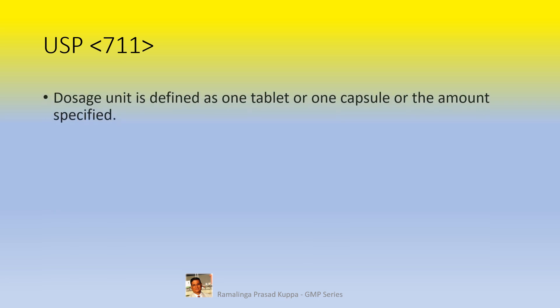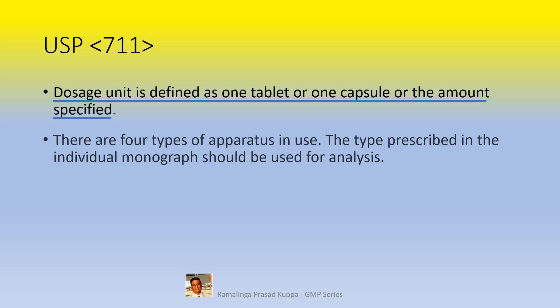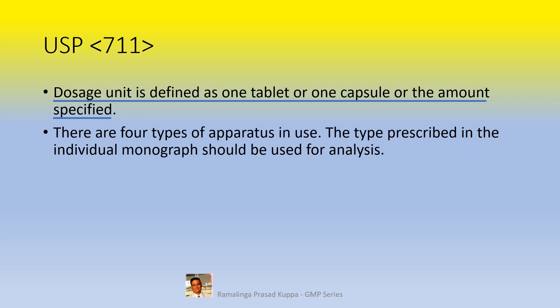Let us see the prescription of USP Chapter 711. A dosage unit is defined as one tablet, one capsule, or the amount specified. There are four types of apparatus in use. The type prescribed in the individual monograph should be used for analysis. Apparatus 1 is the basket apparatus. Floating dosage forms and capsules are generally tested with this type of apparatus.